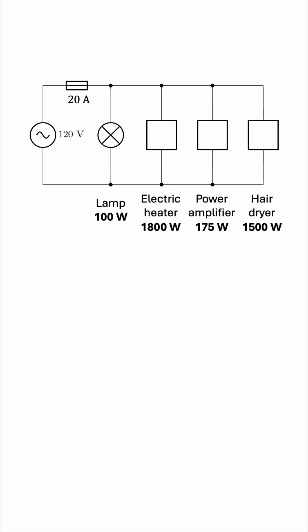We can find the total current the circuit is drawing by dividing the power by the voltage. Dividing the power rating of each appliance by 120 volts gives a total current of approximately 29.8 amperes.